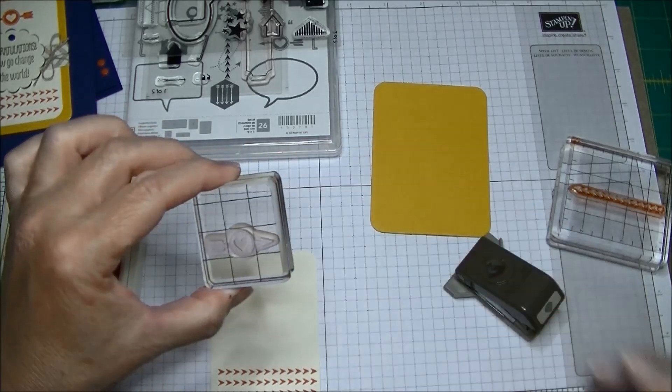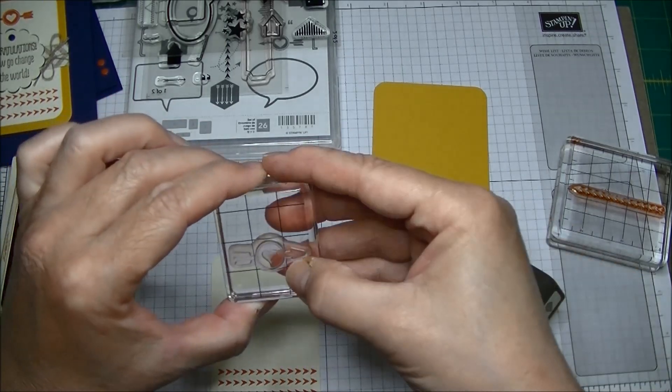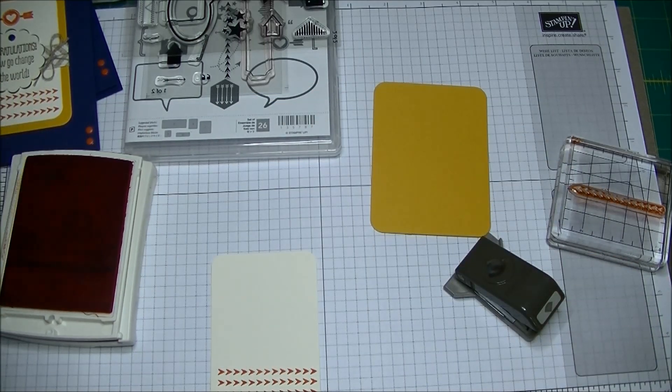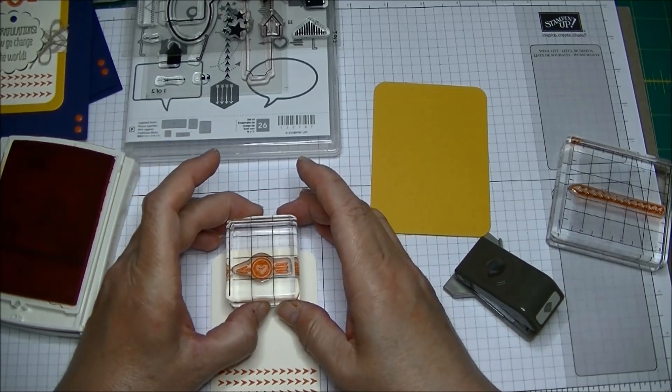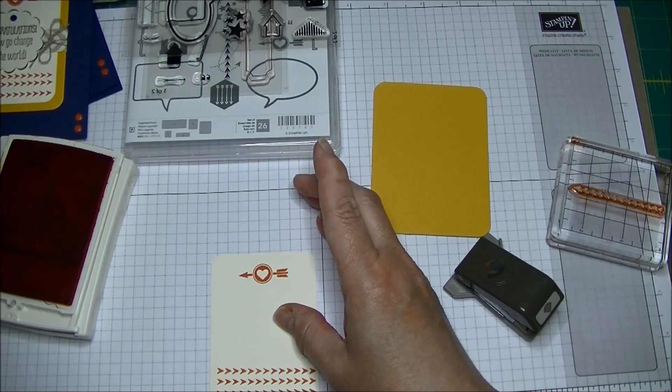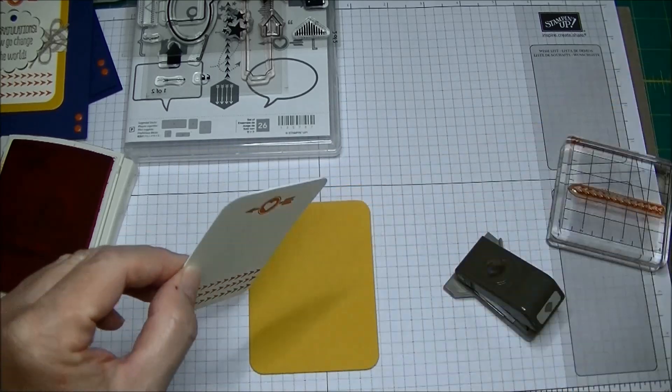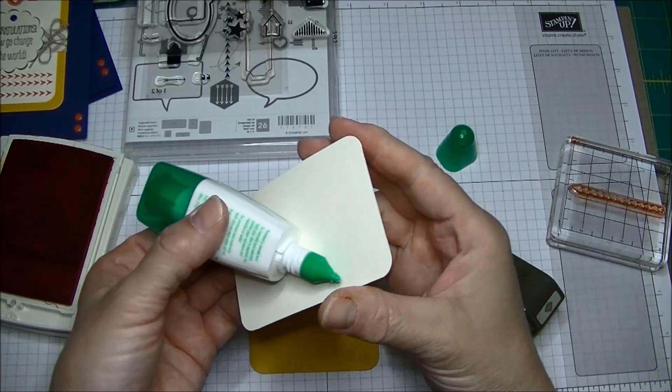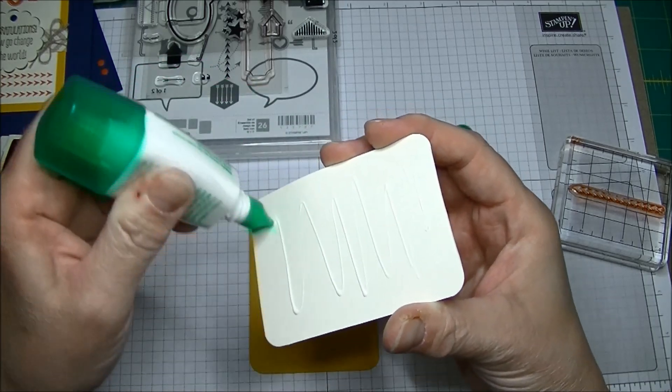Then I took this little heart circle with the arrow. I love that I can see exactly where I'm stamping with the photopolymer stamps. I'm going to center this along the top. Isn't that great? So I'm going to attach this with glue to my Crushed Curry mat and that forms the base.